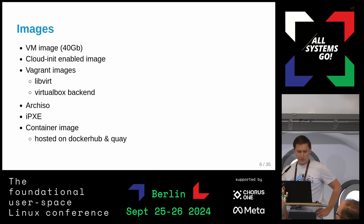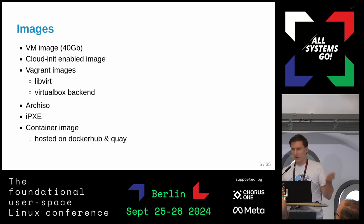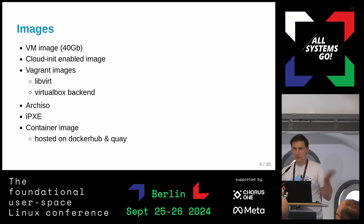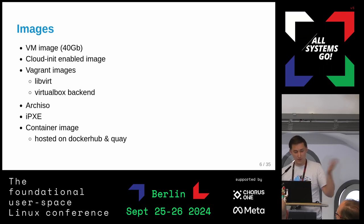What do we actually produce every two weeks? We provide one virtual machine image, basically to toy around — you get a user Arch, you can log in and try it out. We have a cloud image with no user account, just for use with a VPS: you boot the cloud image, add your SSH key in the config file, and voila, you're done.